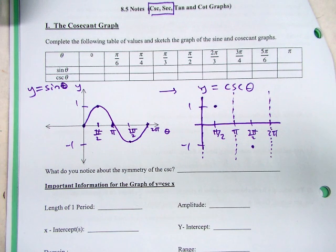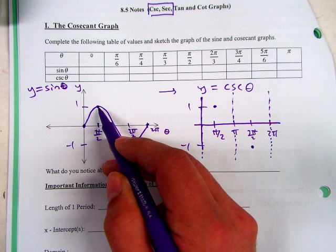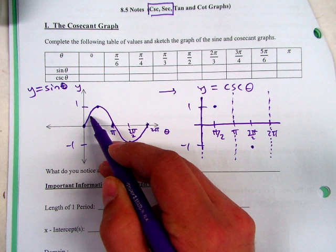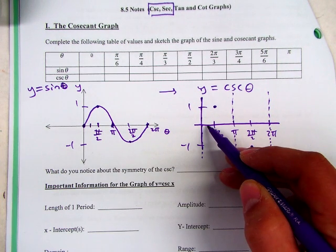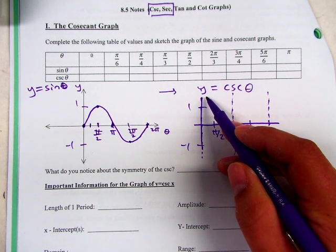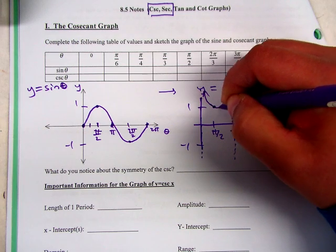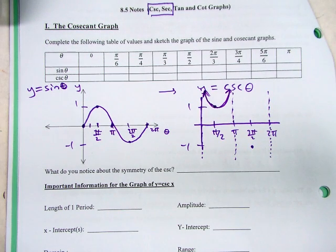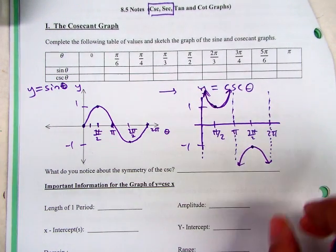We're going to use some common sense here to get the rest of the graph. If I do the reciprocal of one, what did we get? What if I did, so what would y be approximately right where my pen is? A half. What would the reciprocal of one half be? Two. So is it clear that right around here in the middle, sine is right about here, so cosecant should be higher than that, right? Because the reciprocal of a fraction is going to be bigger. Does that make sense?